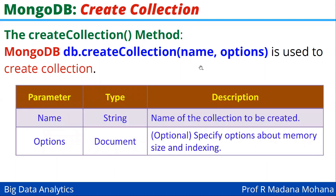Let us see the two parameters — name and options — their types and purpose. The name parameter type is string, and its purpose is the name of the collection to be created. The options parameter type is document, which is optional, and specifies options about memory size and indexing. If you want to define a customized memory size and provide indexing, you have to use the optional options field.